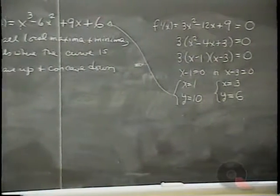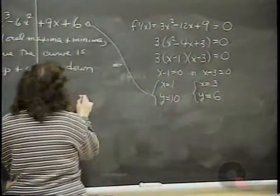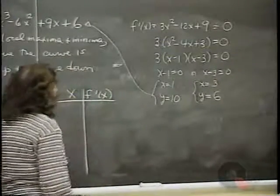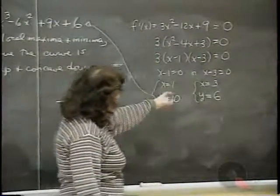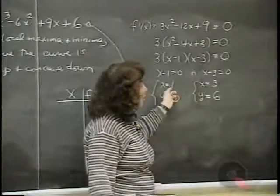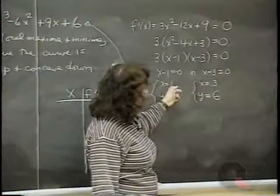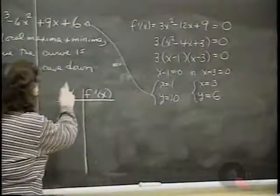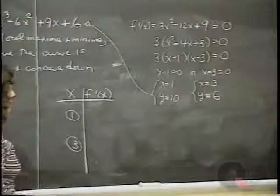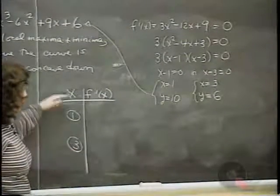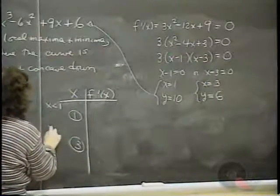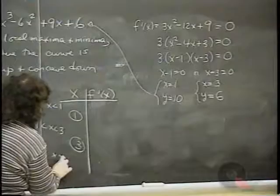Make a chart with x and f prime of x. The critical numbers 1 and 3 break up the number line into three intervals: x less than 1, x between 1 and 3, and x greater than 3. We'll pick a testing value in each interval.